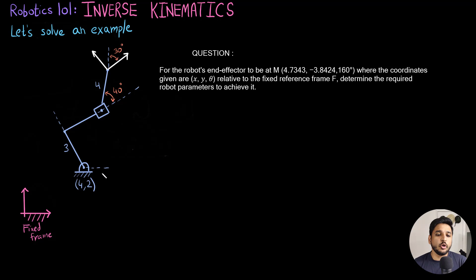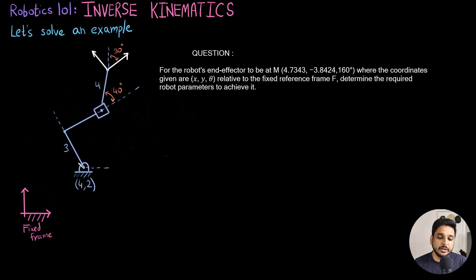I have a robot here which is displaced from the fixed frame 4 units in x and 2 units in y. It has a link here which has a dimension of 3 units, and there is a motor attached here so this link can rotate, and the rotation angle is represented by theta1.